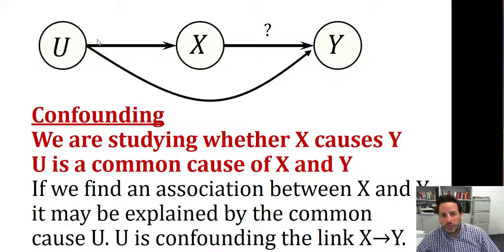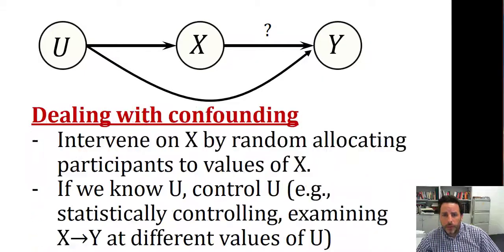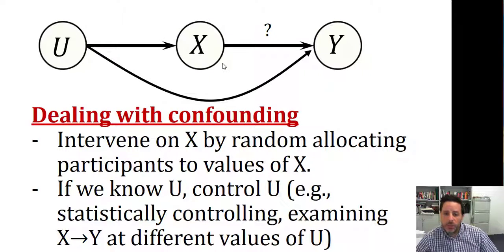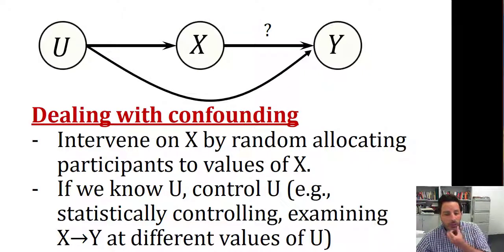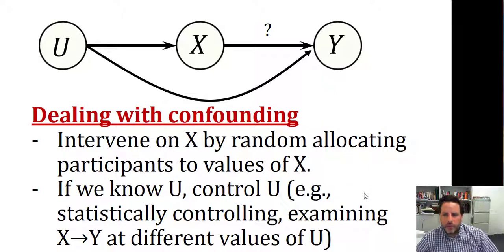Another word for U is a confounder. So this is the problem of confounding. What should we do in order to deal with confounding? Well, what we do is intervene on X by randomly allocating participants to values of X, and if we know U, control for U — for example, statistically controlling or examining the relationship between X and Y at different values of U. I'm going to explain this with an example.